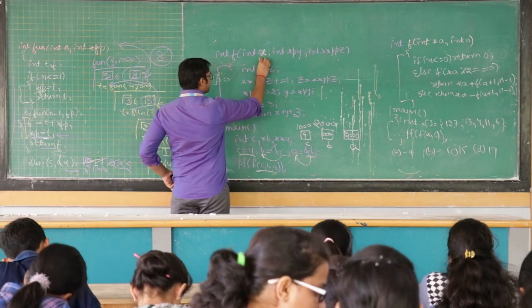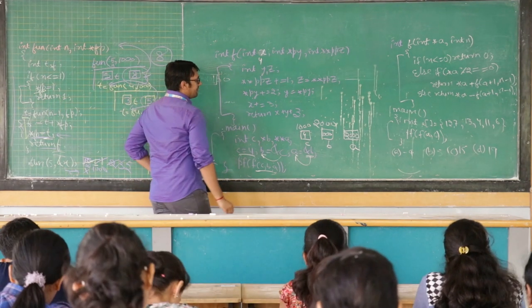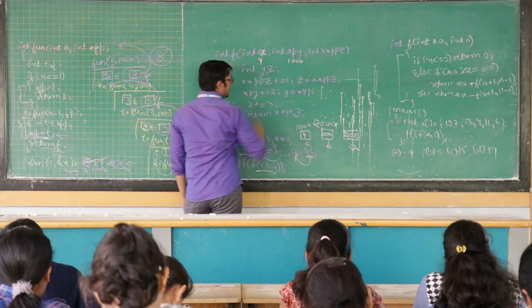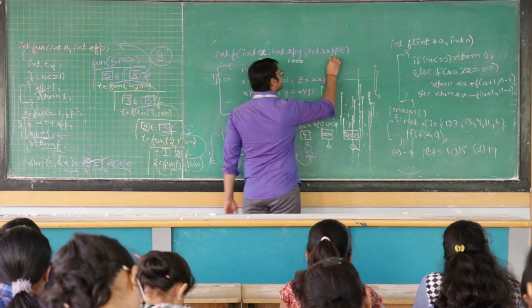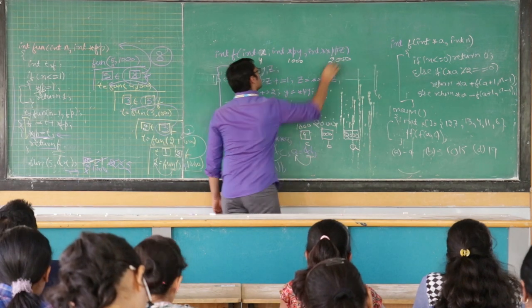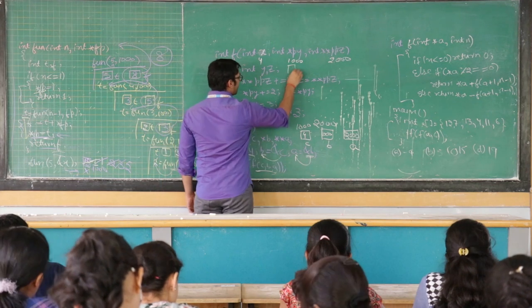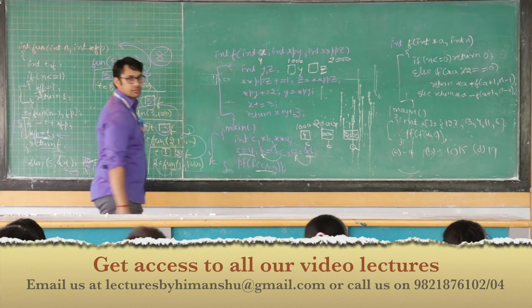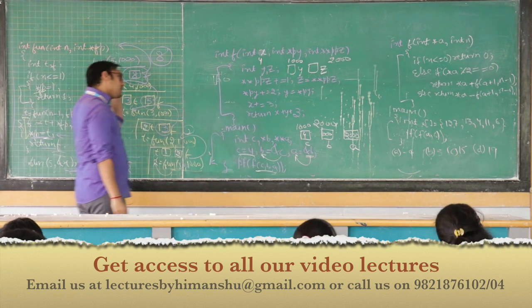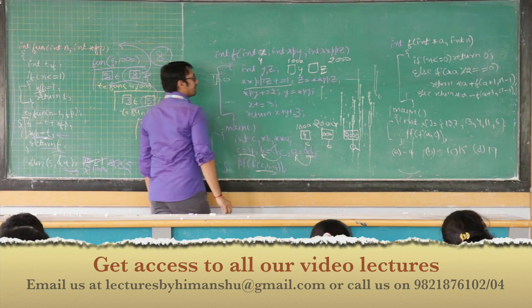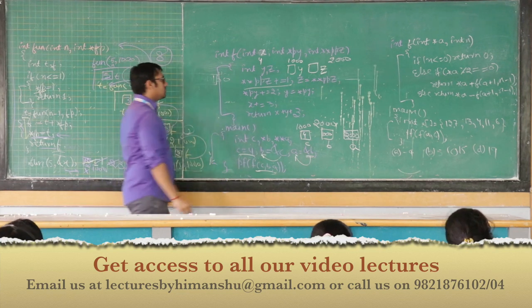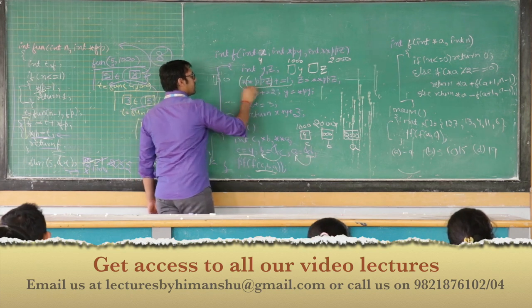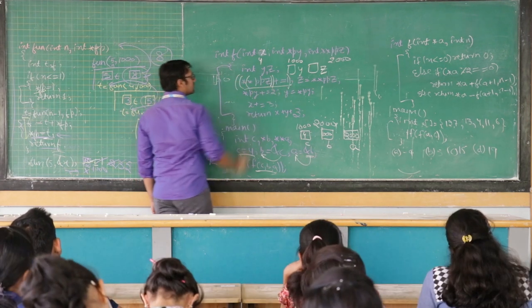So, in x we are copying 4, in py we are copying b that means 1000, and in z we are copying 2000. We have variables y and there is a variable z. Now, here we are doing star star ppz plus equal to 1. In this entire expression, which operator is having highest precedence? This one, then this one, and then this one.